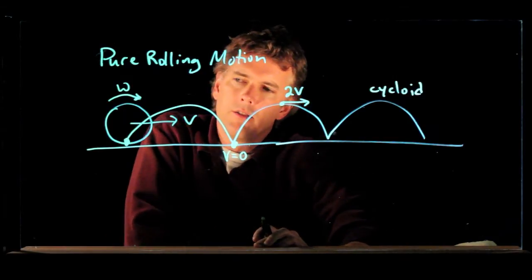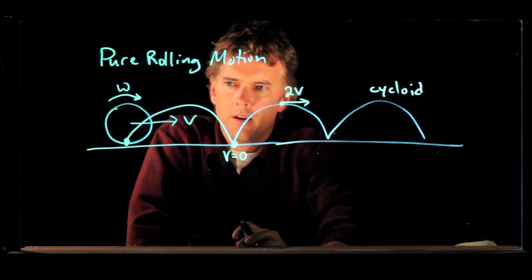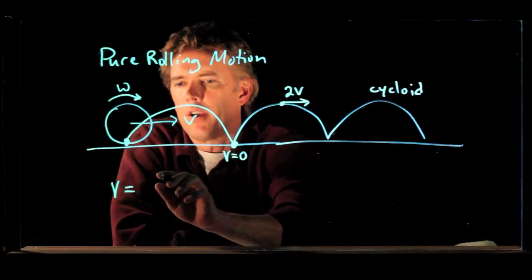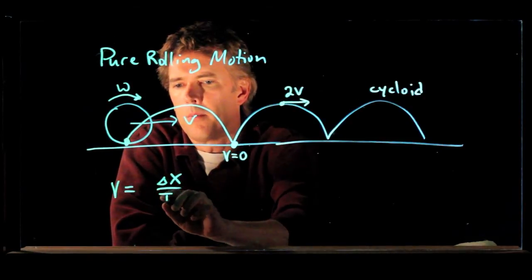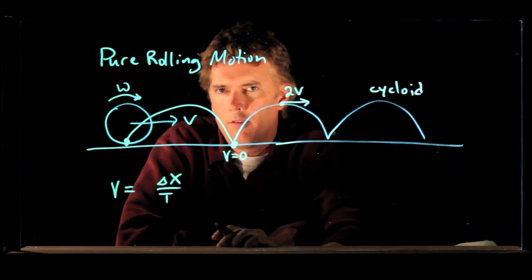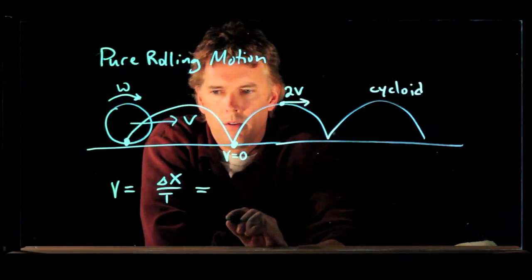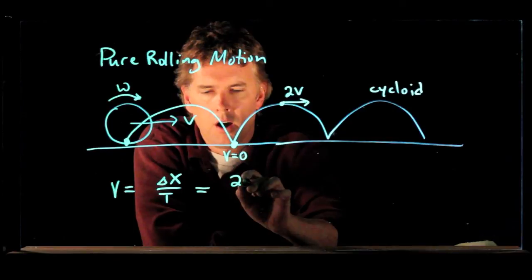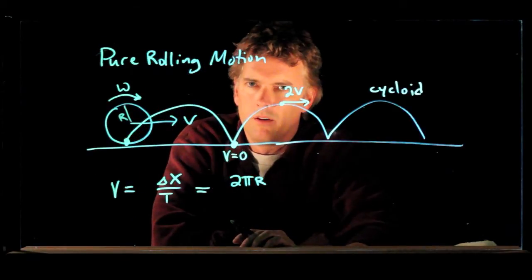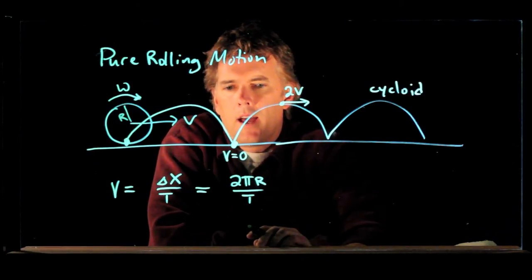Now, how does rolling motion relate to this angular speed, omega? Well, the speed of the wheel is simply how far it goes in some amount of time, t. But how far it goes is, let's say, one rotation of the wheel. If it's one rotation of the wheel, it has gone 2πr, where r is the radius of the wheel. And if it does that in an amount of time, t, then look what happens.